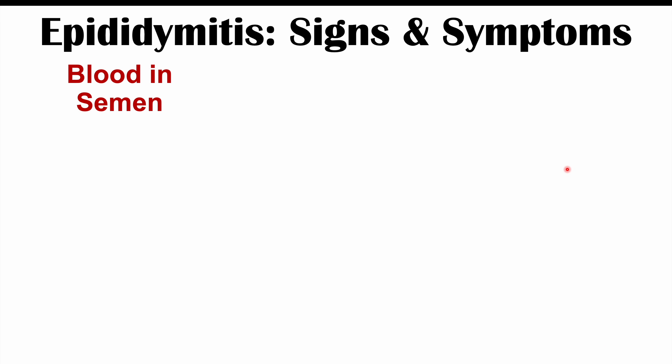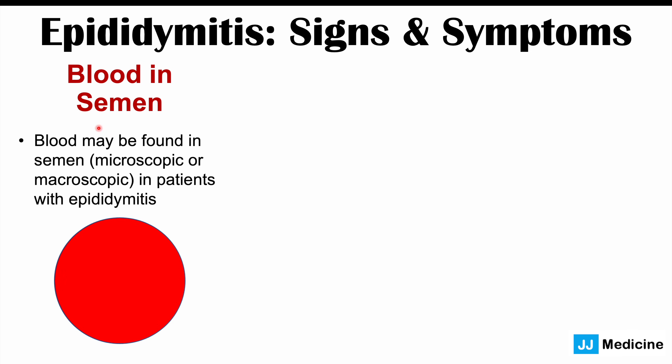Some other important signs that can be found in epididymitis include blood in the semen. This blood may be microscopic — not visible to the patient — or macroscopic, meaning visible red blood in the semen. This does not occur in all patients with epididymitis, but it can occur in some.